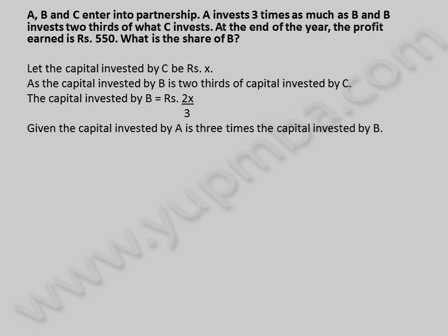Given the capital invested by A is 3 times the capital invested by B, capital invested by A is equal to 3 into 2X by 3, which equals 2X rupees.